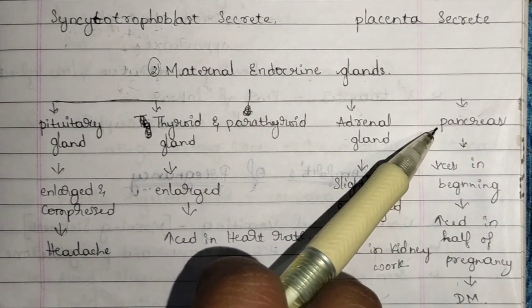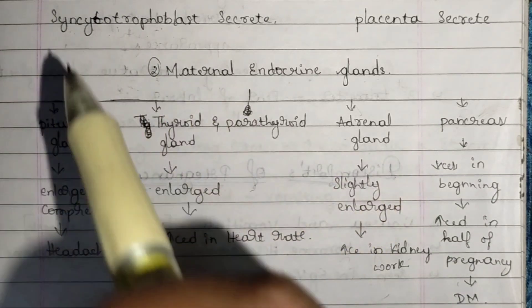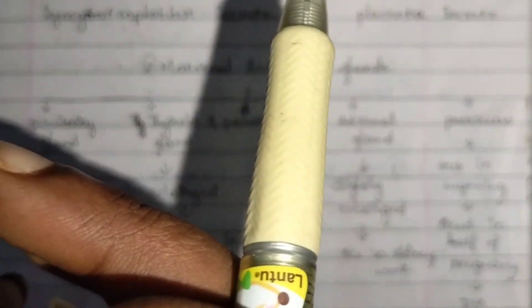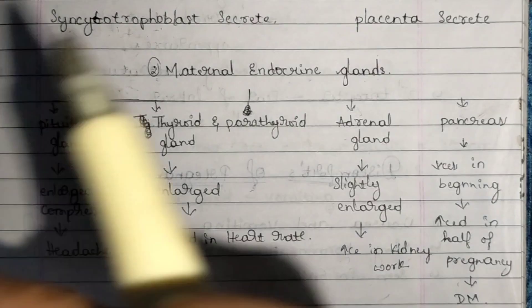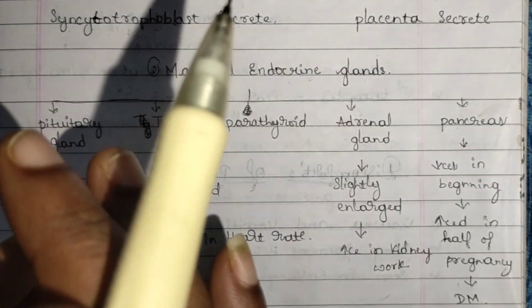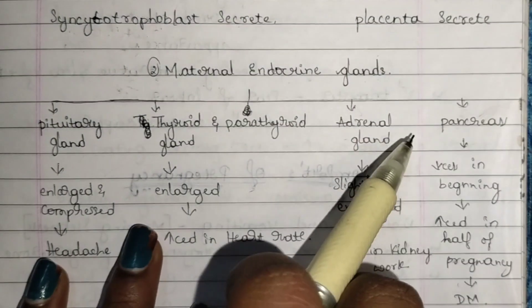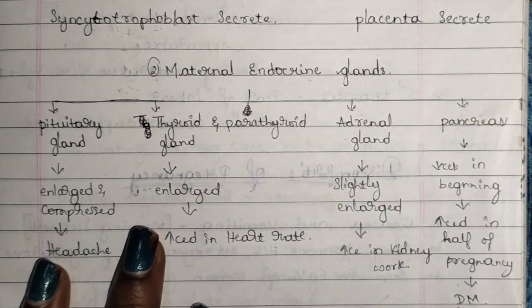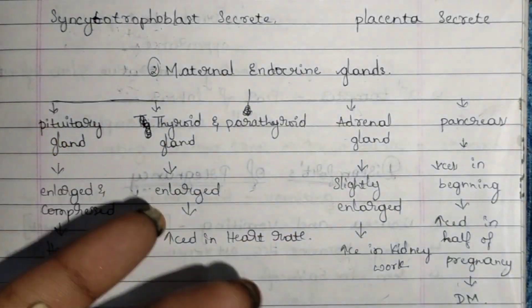Next, the pancreas. At the beginning of pregnancy, the pancreas will decrease in size. But after the halfway point of pregnancy, it will increase in size. Because of this decreasing and increasing in size, there is a chance of getting diabetes mellitus — that is nothing but sugar.